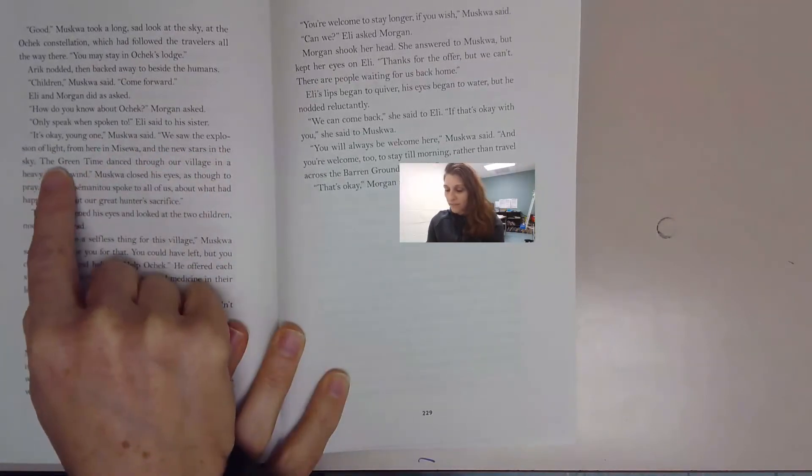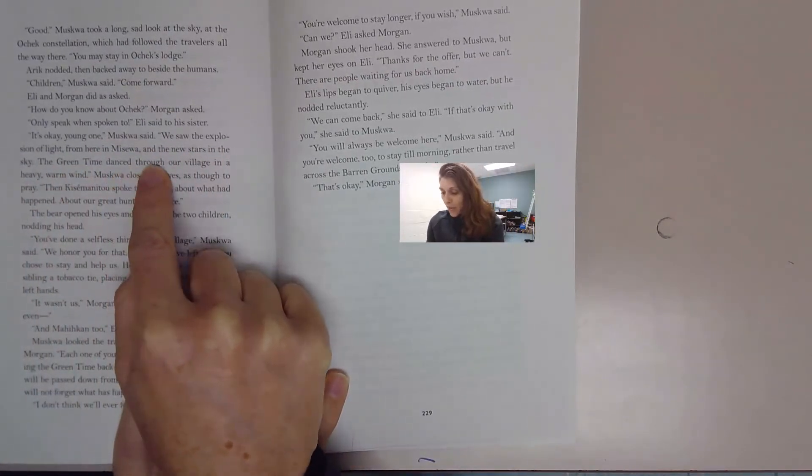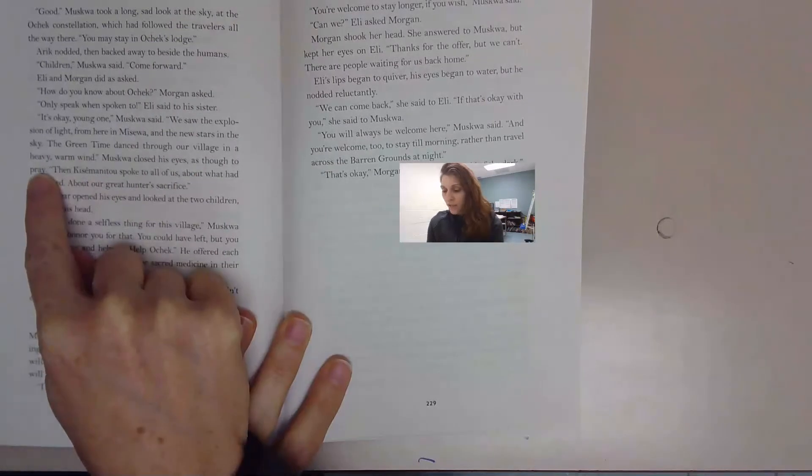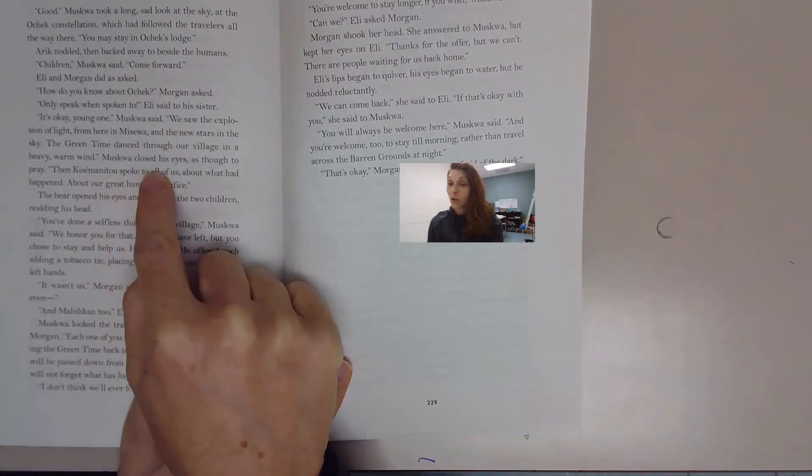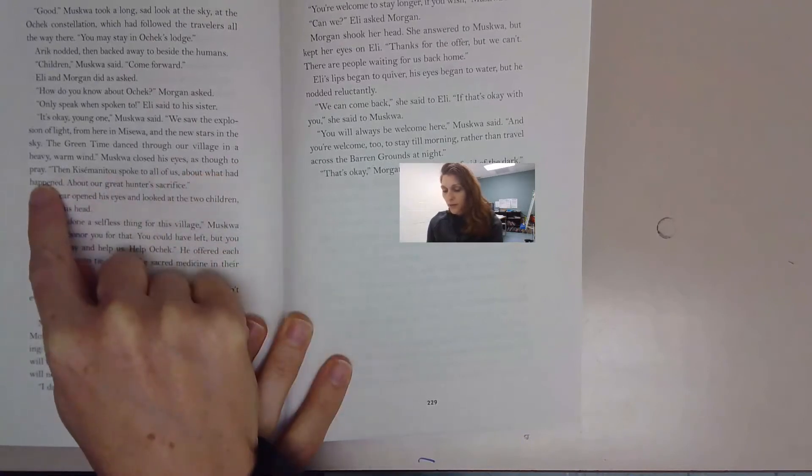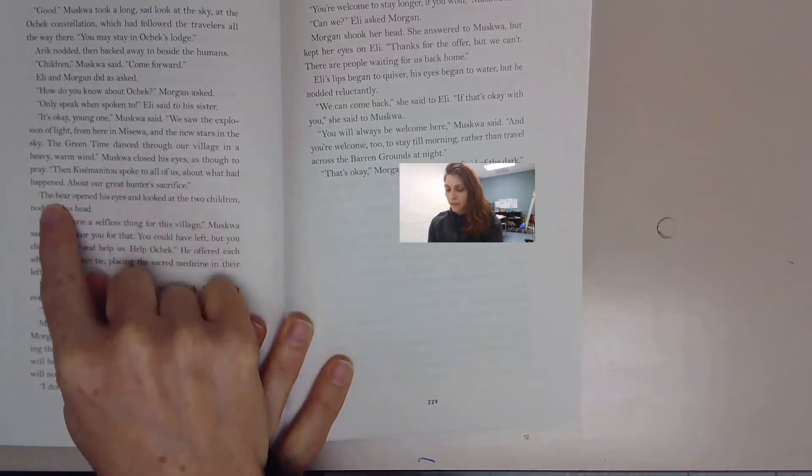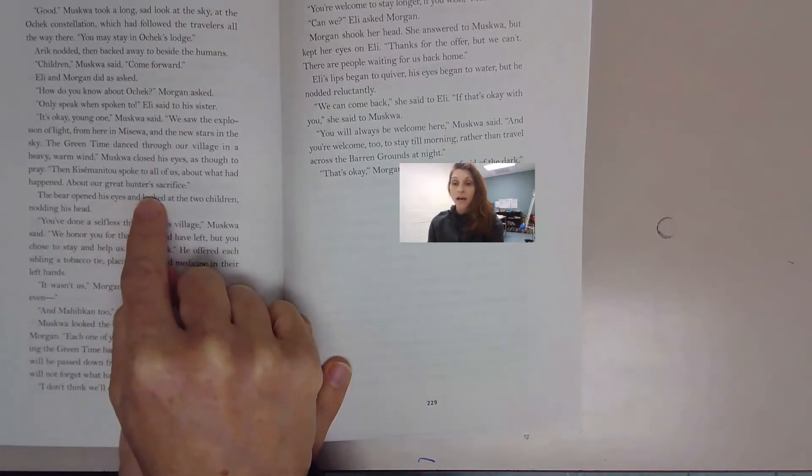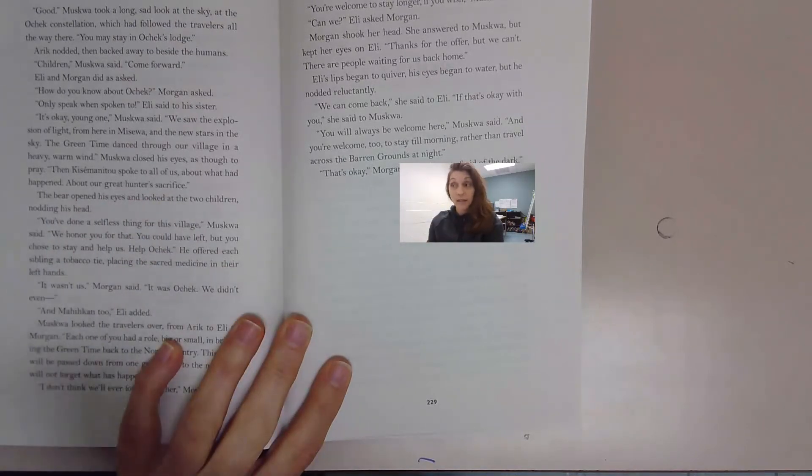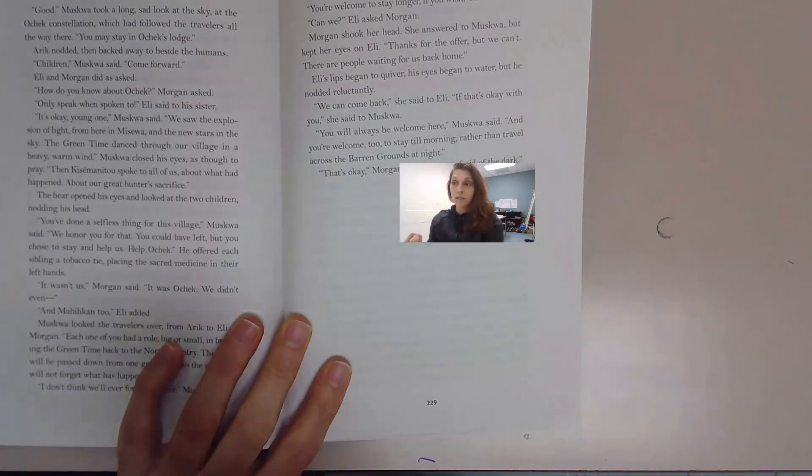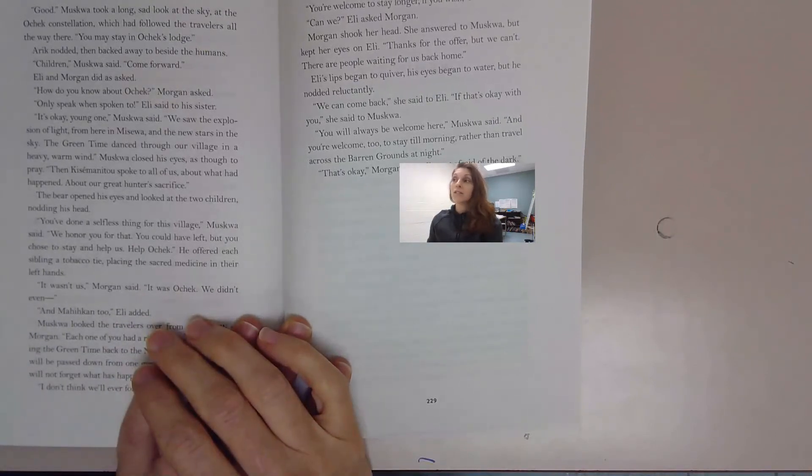We saw the explosion of light from here in Mizwa and the new stars in the sky. The green time danced through our village in a heavy, warm wind. Muskwa closed his eyes as though to pray. Then Kissamanitou spoke to all of us about what had happened, about our great hunter's sacrifice. So Kissamanitou creator not only spoke to Eric and Eli and Morgan, creator came and spoke to the villagers of Mizwa and explained what Ocek had done, the sacrifice Ocek had made for the well-being of others.